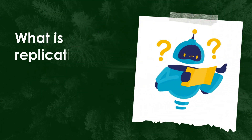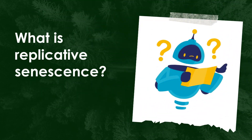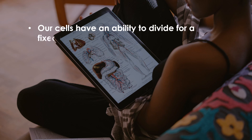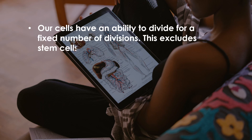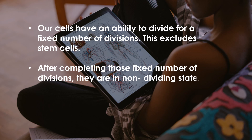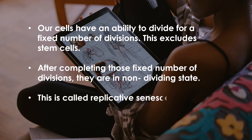What is replicative senescence? Our cells have the ability to divide for a fixed number of cell divisions — this excludes stem cells. After completing those fixed number of cell divisions, they go into a non-dividing state. This is called replicative senescence.